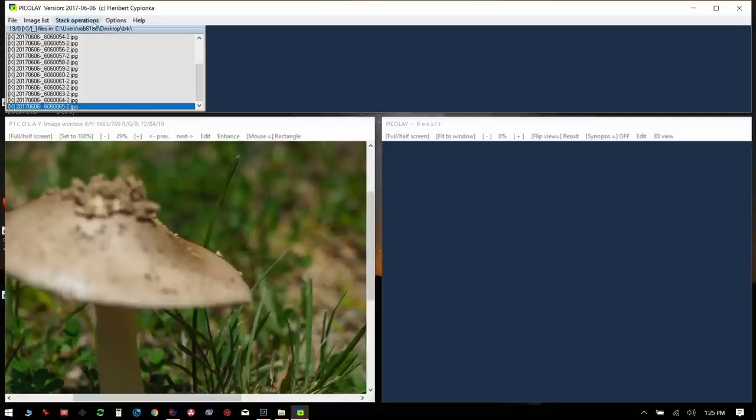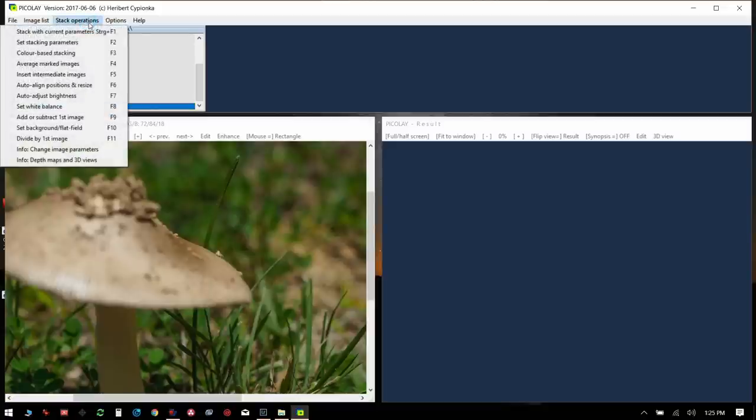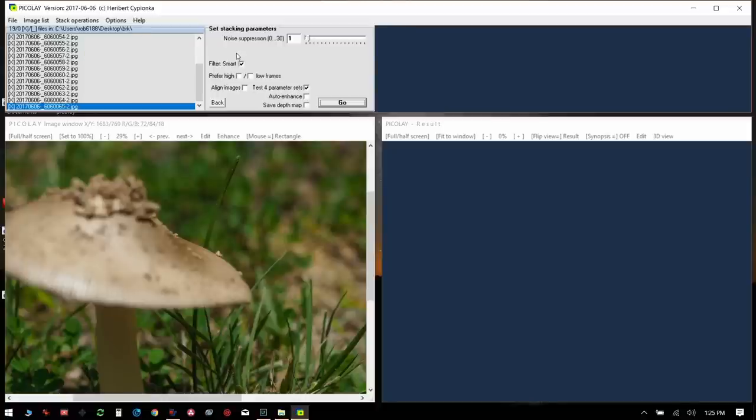So to stack these images, all you have to do is go to stack operations. Click the set stacking parameters. And there's some options here. And you can experiment with these. But I'll show you what I did for this picture. I'm going to click align images. And I'm going to click set test for parameters. And I'll talk about that while this is processing.